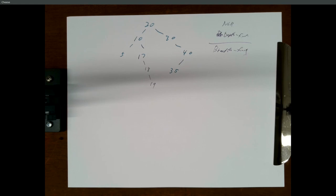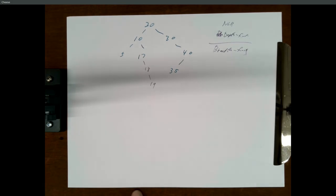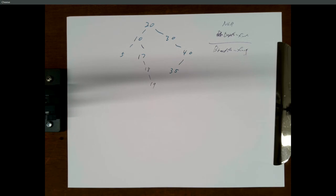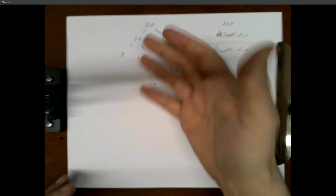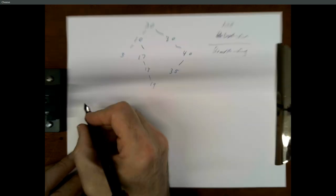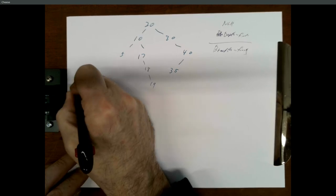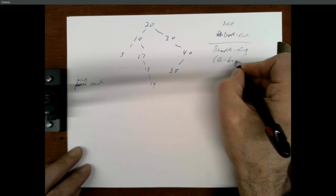With breadth-first, the idea is to move across the tree and cover everything at one level before moving down. A breadth-first traversal would visit the 20, then the 10 and 30, then 5, 17, 40, then 18 and 35, then 19. It's moving across doing each level first, and as it finishes each level it slowly moves down to deeper nodes. That's particularly useful if you're trying to print the tree in a visual top-to-bottom layout. A breadth-first traversal uses a queue.